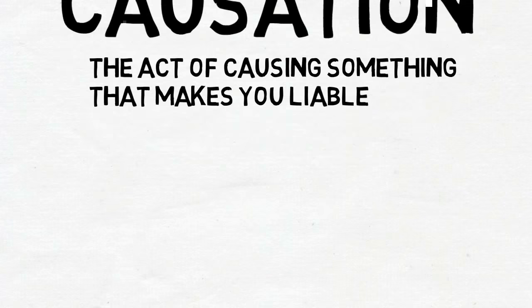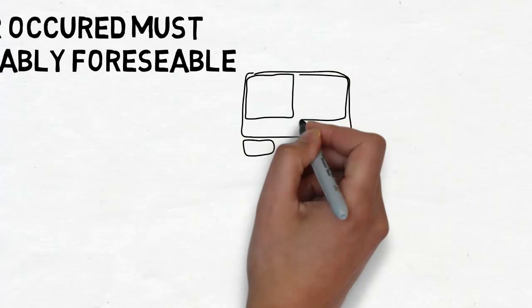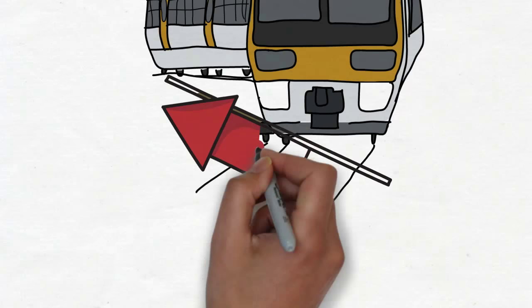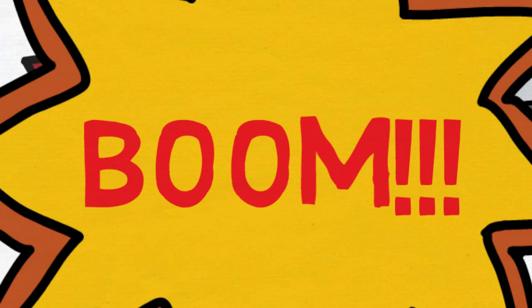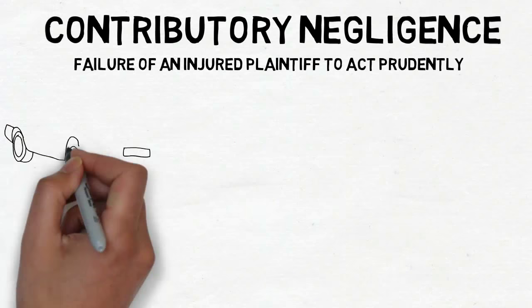Now we'll look at remoteness — whatever occurred must be reasonably foreseeable. In the Long Island Railway case, a man was trying to catch a moving train. Two employees helped him on board, but one of the man's packages carrying fireworks fell underneath the train, which set them off. A woman standing down the tracks was injured by the explosion after shockwaves knocked over a scale. Next, contributory negligence — a failure of an injured plaintiff to act prudently. The most common example is when the injured plaintiff isn't wearing a seatbelt.